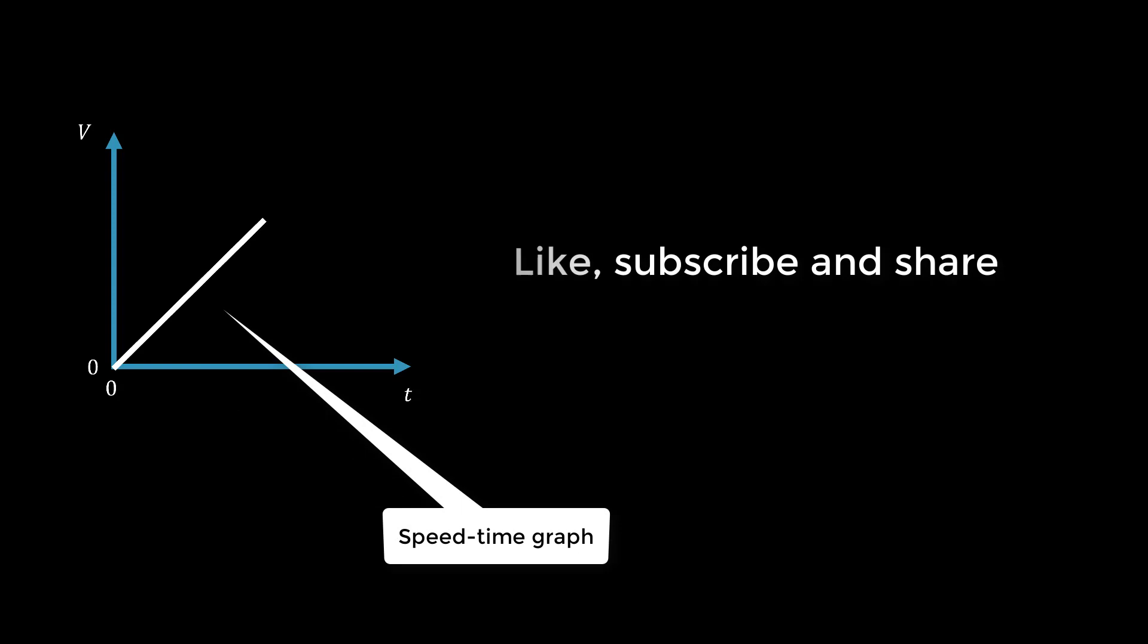Consider a speed-time graph as shown below for a body in motion. The graph is a straight line starting from 0,0 and ends at 10.0, 20.0.